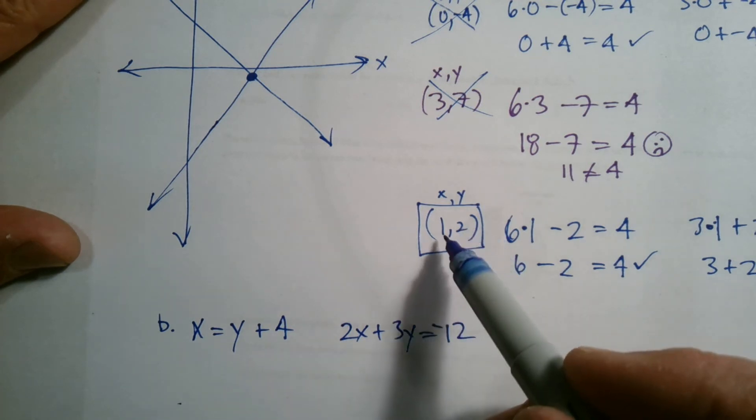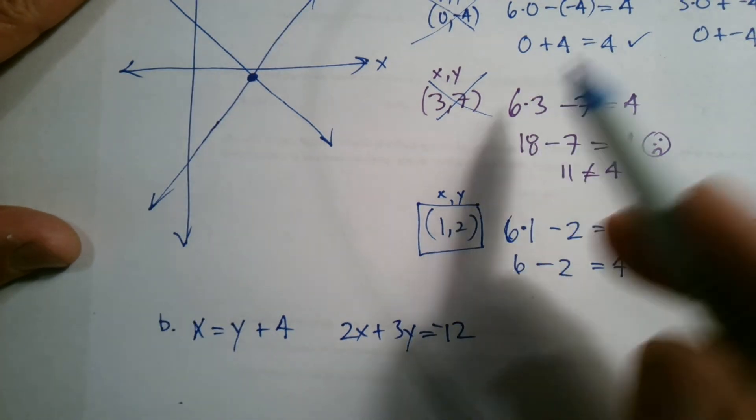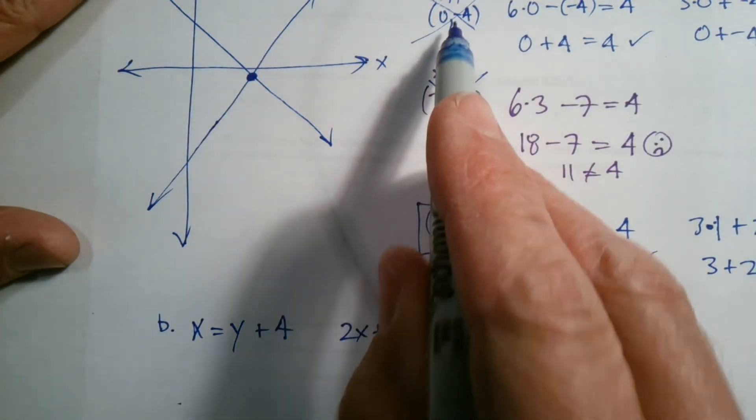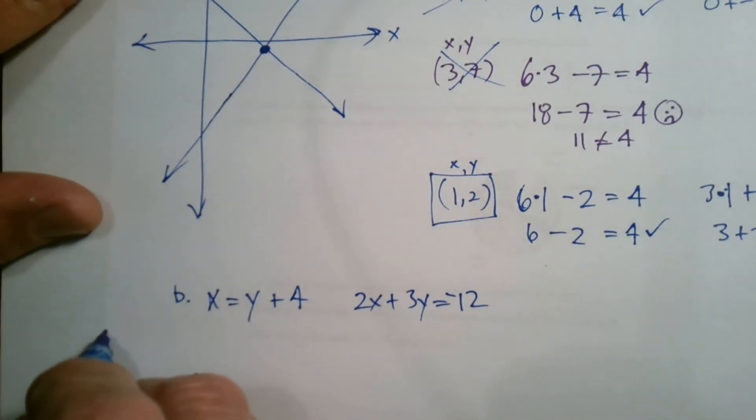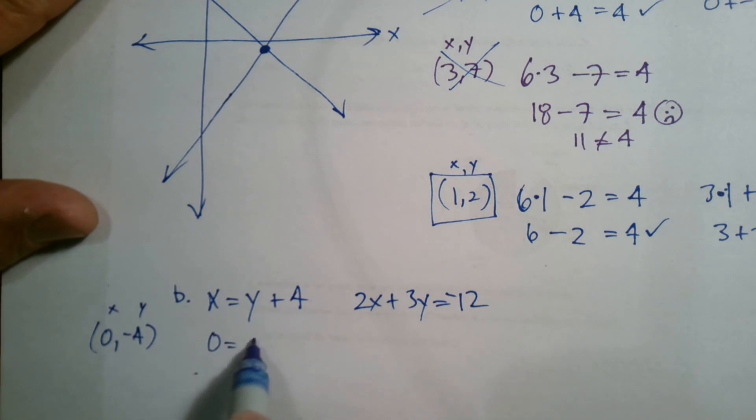So I know it's not 1, 2, because I already used that one up. So let's try, let's go up and try the 0, negative 4. So if I try 0, negative 4, again, your x and your y, does 0 equal negative 4 plus 4? Is that true? Yeah, that's true. Negative 4 plus 4 is 0, and those are equal. So check, that one worked.